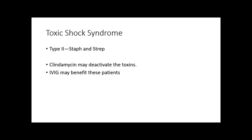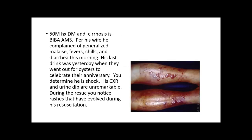Type 2 is an interesting form because approximately 50% of the time patients will have concomitant toxic shock syndrome — a double whammy of two life-threatening conditions. Staph and strep are going to release exotoxins and superantigens, which contribute to the overall sepsis picture. These patients will actually benefit directly from clindamycin, because clindamycin will deactivate the toxins — whereas other patients primarily need source control. IVIG has also been shown to maybe help in refractory cases.